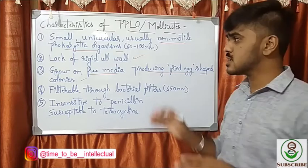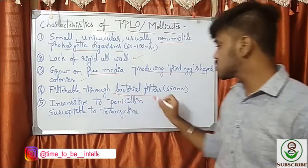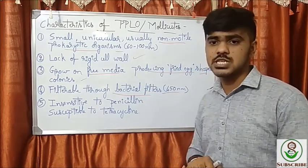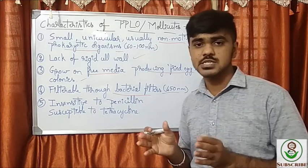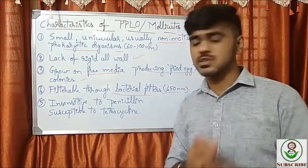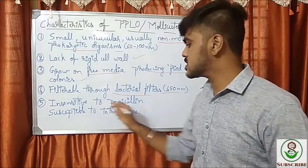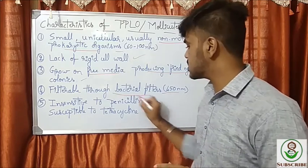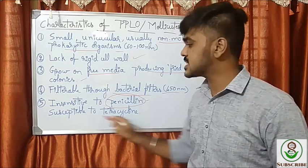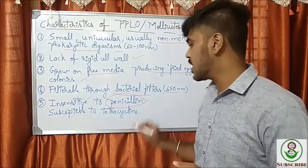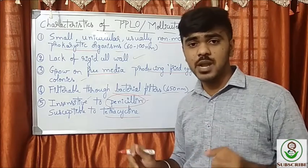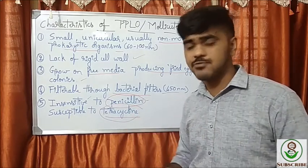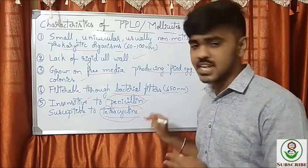As they are smaller than bacteria, they are filterable through bacterial filters — that is 450 nanometer filters — hence they were confused with viruses. They are insensitive to penicillin because penicillin acts on the cell wall, and they lack a rigid cell wall. However, tetracycline acts on the cytoplasm, so they are susceptible to tetracycline.